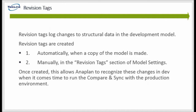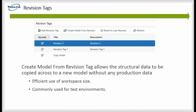A little more on revision tags. The screenshot shows what the revision tag settings look like under model settings and some added functionality relating to revision tags. Developers can create a model from a revision tag, which allows the structural data to be copied across to a new model without any production data. This is commonly used for the dev and test environments as an efficient use of workspace size and typically ends up saving developers a lot of time. Errors and formulas take time to be restored, and when the models are smaller they're able to be restored a lot faster. This information pretty much sums up the background of all ALM functionality.